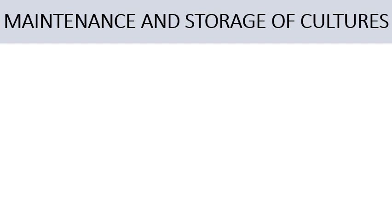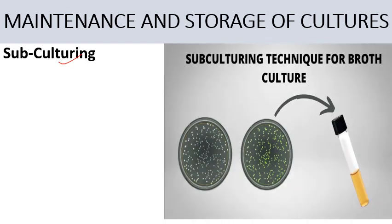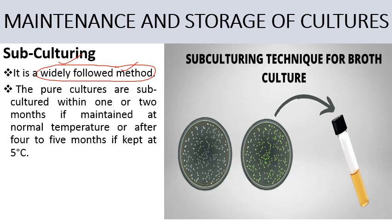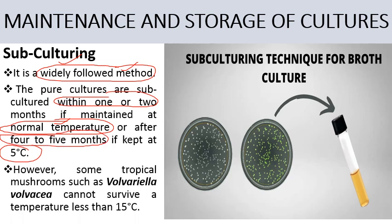Next comes maintenance and storage of cultures. The first method is subculturing — we subculture the pure culture of mushroom and store it for longer duration. This is a widely used method. Pure cultures are subcultured within one or two months if maintained at normal temperature, but if kept at 5 degrees Celsius, subculturing can be done after 4 to 5 months. However, some tropical mushrooms like Volvariella volvacea cannot survive at temperatures less than 15 degrees Celsius.